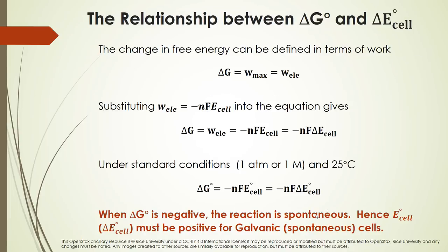Now let's talk about free energy. We can redefine free energy in terms of work. Delta G is basically the energy free to do useful work in a chemical reaction — in this case, electrical energy. Substituting our equation for work in terms of cell potential and charge transferred, we get: delta G equals negative NF times delta E_cell.